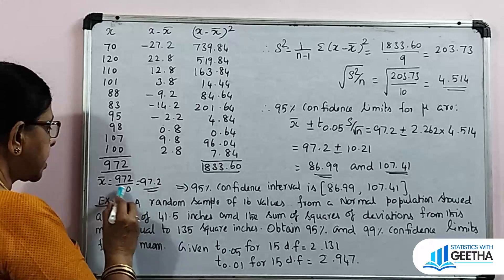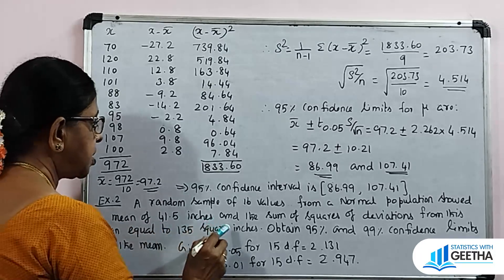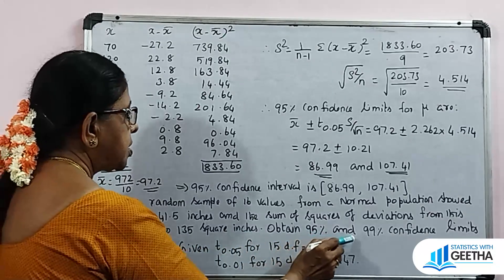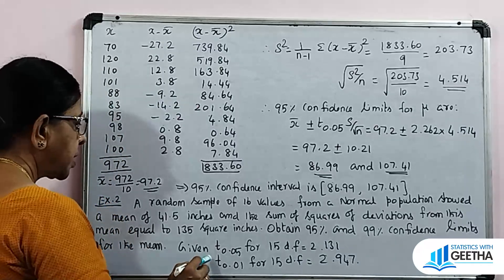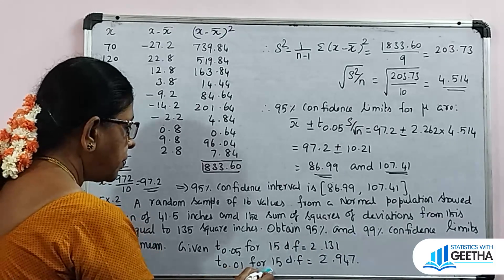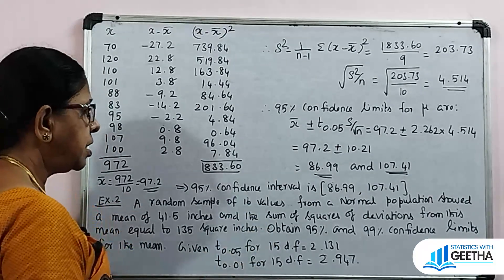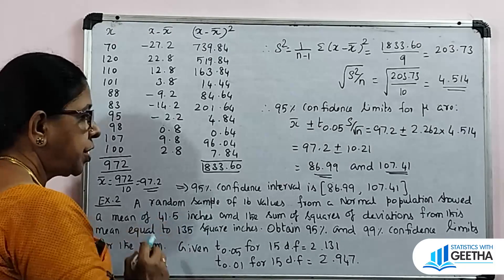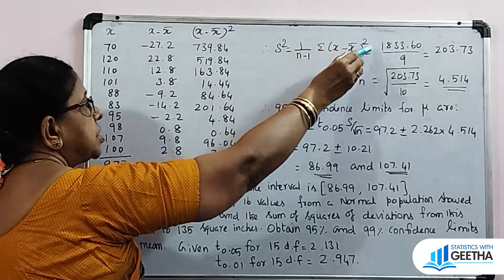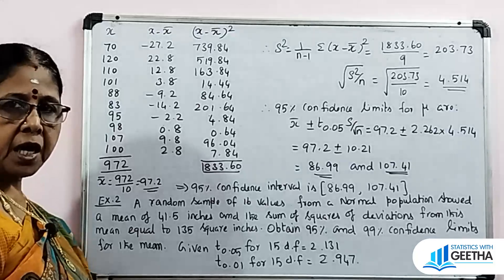Exercise number 2: A random sample of 16 values from a normal population showed a mean of 41.5 inches and the sum of squares of deviations from this mean equal to 135 square inches. Obtain 95% and 99% confidence limits for the mean. Given: T at 0.05 for 15 degrees of freedom equals 2.131, and T at 0.01 for 15 degrees of freedom equals 2.947. So n equals 16, X̄ equals 41.5, and summation (X minus X̄)² equals 135.